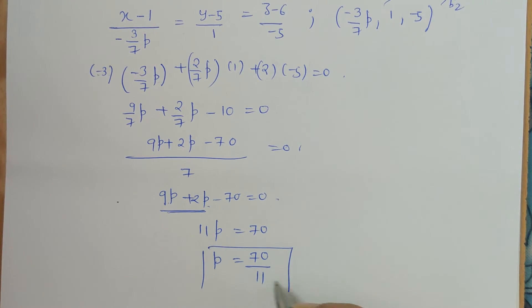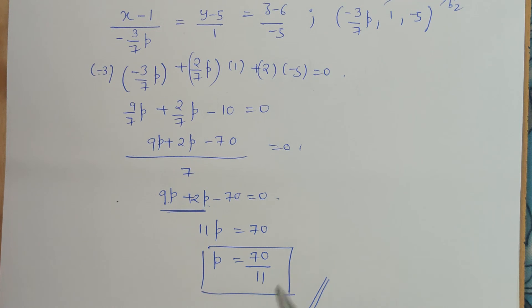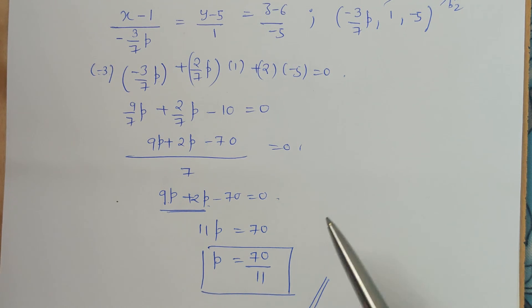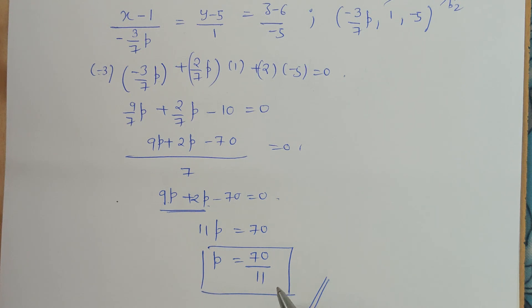So this is how we can solve for p when a certain condition is given. The formula to be used corresponds to the given condition — here the lines were perpendicular, so the product of the directional ratios had to be zero, which helped us find the value of p. Thank you.